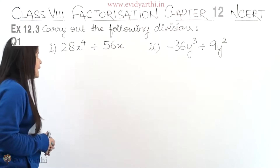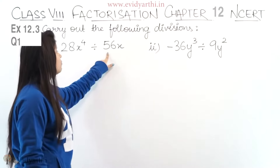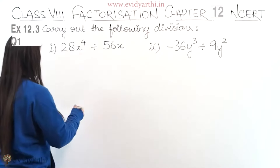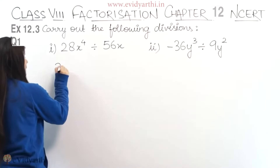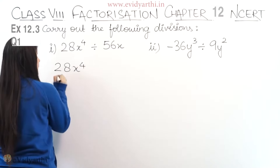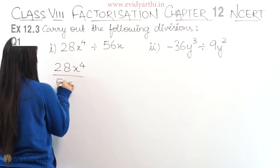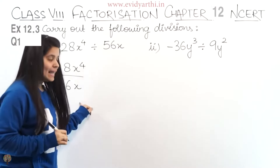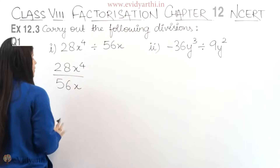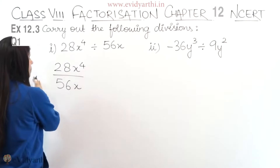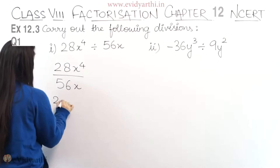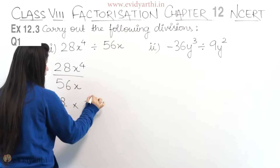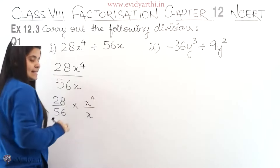The first part is 28x raised to the power 4 divided by 56x. So we have to divide it here. When we have to divide the numbers, we write the numbers as 28x raised to the power of 4 divided by 56x. First, we divide the numbers and the variables separately. So we write it as 28 divided by 56, into x raised to the power of 4 divided by x.